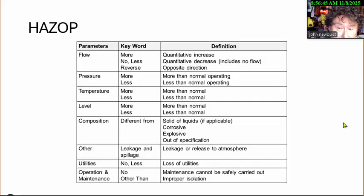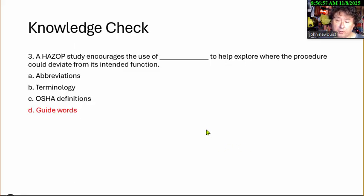What would happen with that pump if it had too much flow? Would it bust the pump? Would the seals leak? Same thing. So the HazOp encourages the use of guide words where the procedure could deviate from its intended function. Having done several of these, these are easy to do. You just take each piece of equipment, you go through the guide words of pressure, temperature, volume, etc., plus your history of the piece of equipment.